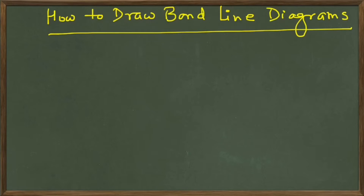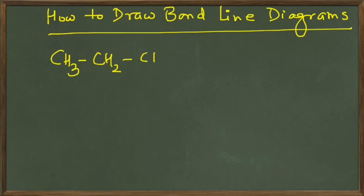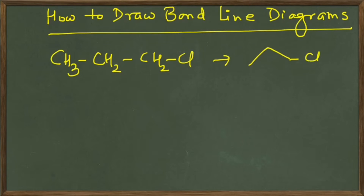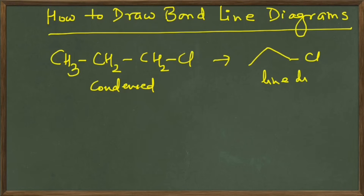Our goal for this lecture is that we want to be able to convert something like CH3 CH2 CH2 CL into a line diagram. So we want to be able to draw from this condensed formula, or complete formula, to a line diagram. Let's see what rules will help us do that.